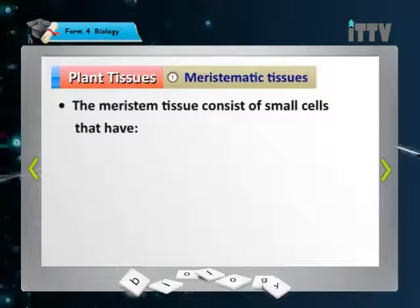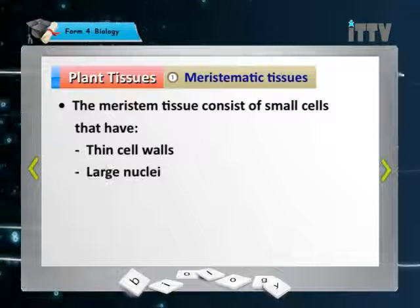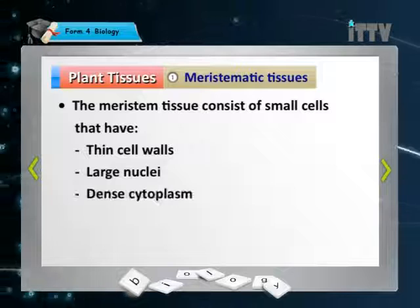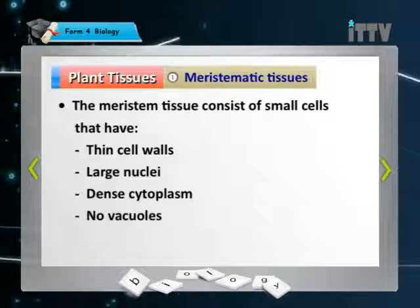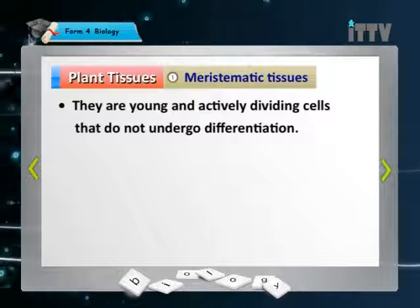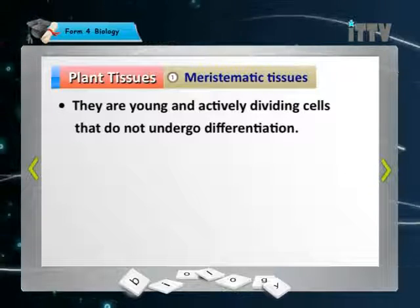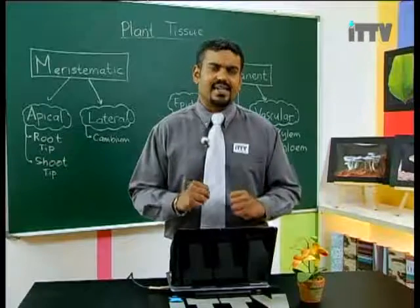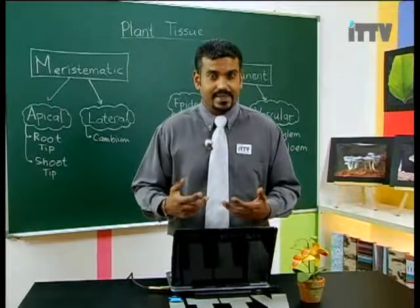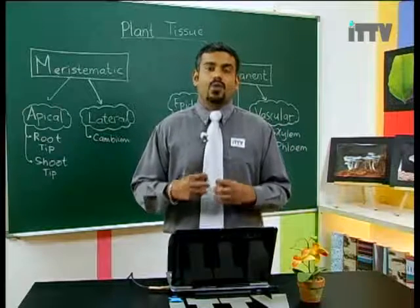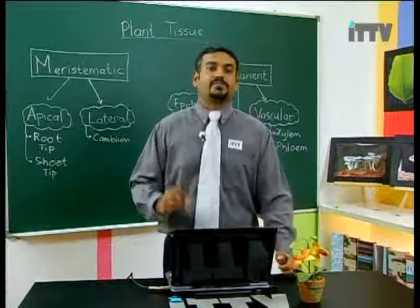Meristematic tissues consist of small cells which have thin cell walls, large nuclei, dense cytoplasm, and most importantly, no vacuoles. These tissues are young and actively dividing cells that do not undergo cell differentiation. Cell differentiation is another word for cell specialization — it happens when a cell or group of cells forming a tissue needs to carry out a specific function.